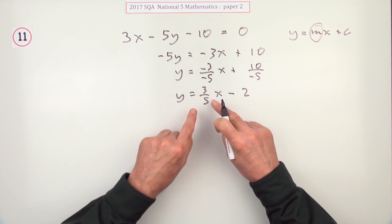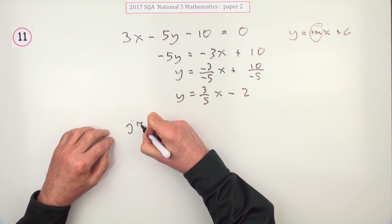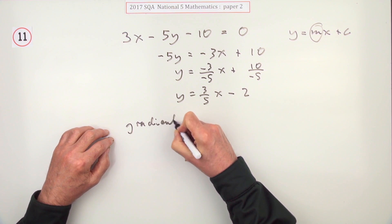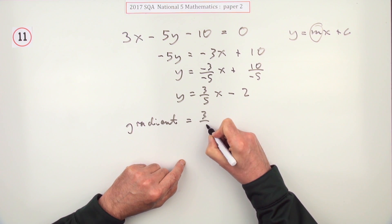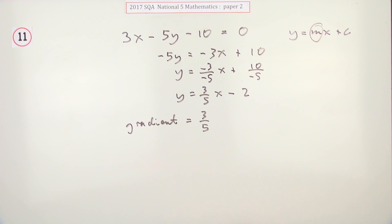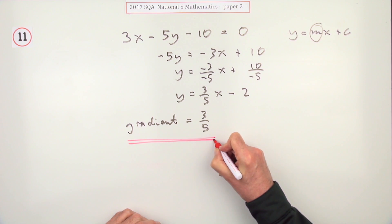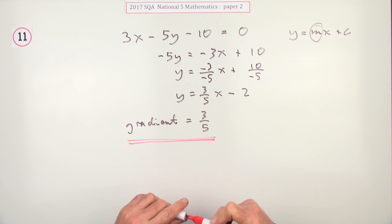You're not interested in minus 2 because there's the gradient there. Gradient equals 3 fifths. And I'm presuming it's okay just to write m equals 3 fifths because that is the convention for it.